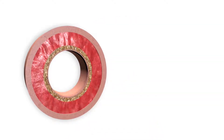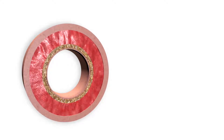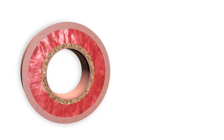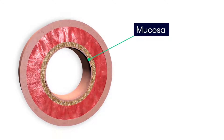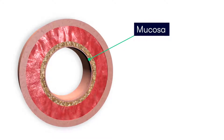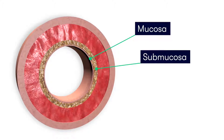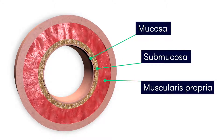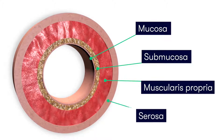Taking a closer look at the large bowel, we can see that the bowel wall is composed of four layers. The inner layer, which lines the lumen of the bowel, is the mucosa. Moving outwards, we have the submucosa, the muscularis propria, and finally the outermost layer, which is the serosa.